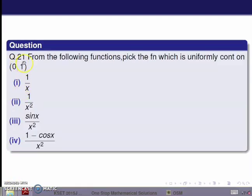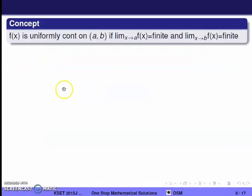Next question, question 21: From the following functions, pick the function which is uniformly continuous on open interval (0,1). A function f(x) is uniformly continuous on open interval (A,B) if limit as x→A of f(x) is finite and limit as x→B of f(x) is finite. First option: 1/x — checking limit as x→0, we get 1/0, which is not defined, so 1/x is not uniformly continuous.